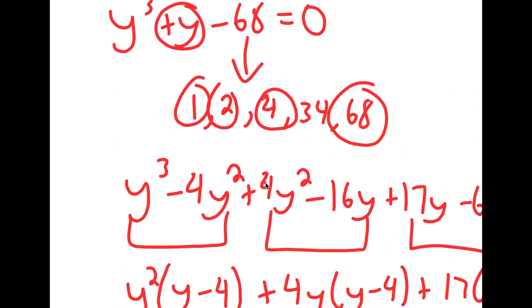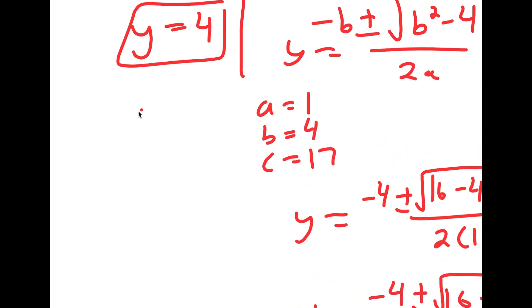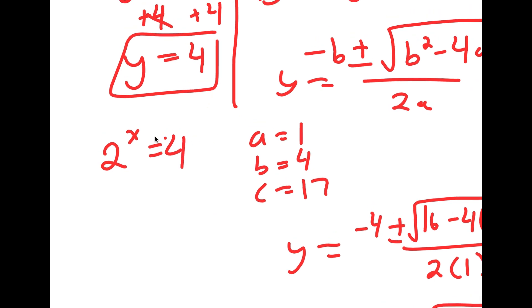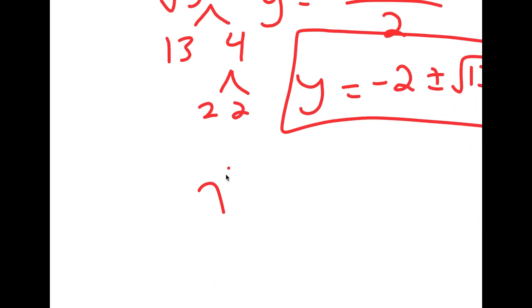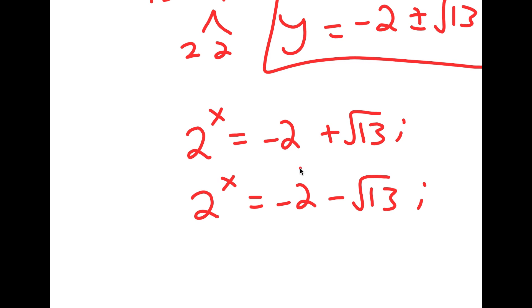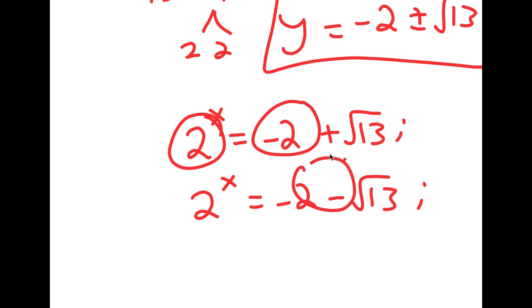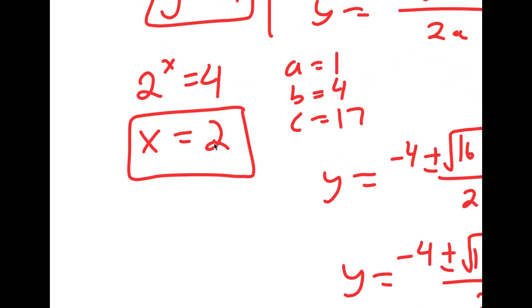Now that we know these values of y — remember we let 2 to the power of x equal y — so I get 2 to the power of x equals 4, which obviously gives x equals 2. That's one solution. I also get 2 to the power of x equals negative 2 plus the square root of 13i, and 2 to the power of x equals negative 2 minus the square root of 13i. But we can't take the power of a positive number and make it equal a negative number, so there are no solutions for these two. Therefore, x equals 2 is the only solution to this problem.